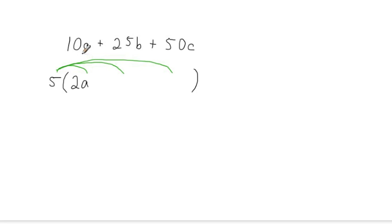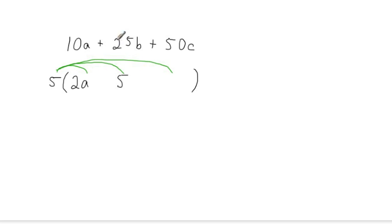You just have to answer that same question for the last two terms. What do I multiply 5 by to get 25b? First look at the coefficients — what do I have to multiply 5 by to get 25? This is the same question as: what's 25 divided by 5? The correct answer is 5. When you multiply 5 by 5, you'll get 25, but you also need to multiply in a b. And of course, these two need to be added together in order to apply the distributive property correctly.